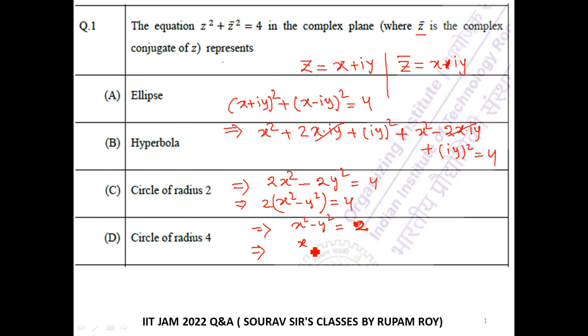Now, x by root 2 whole squared minus y by root 2 whole squared, that is 1.